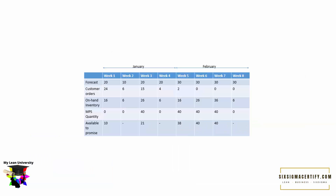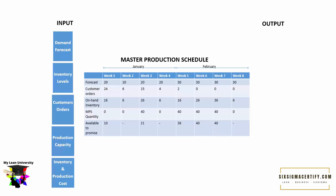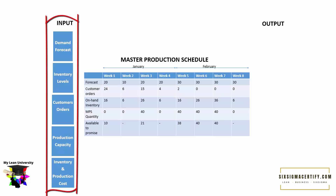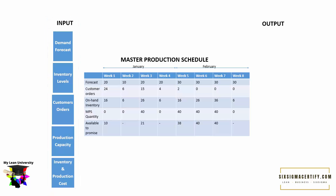This is one example of the Master Production Schedule. Here we have forecast, customer orders, and on-hand inventory for January and February — a total of eight weeks. The inputs needed to produce an MPS include: demand forecast, inventory levels on hand, customer orders, production capacity, and inventory and production costs. If inventory and production costs are very high, that may cause trouble, so these five inputs must be considered before producing the MPS.